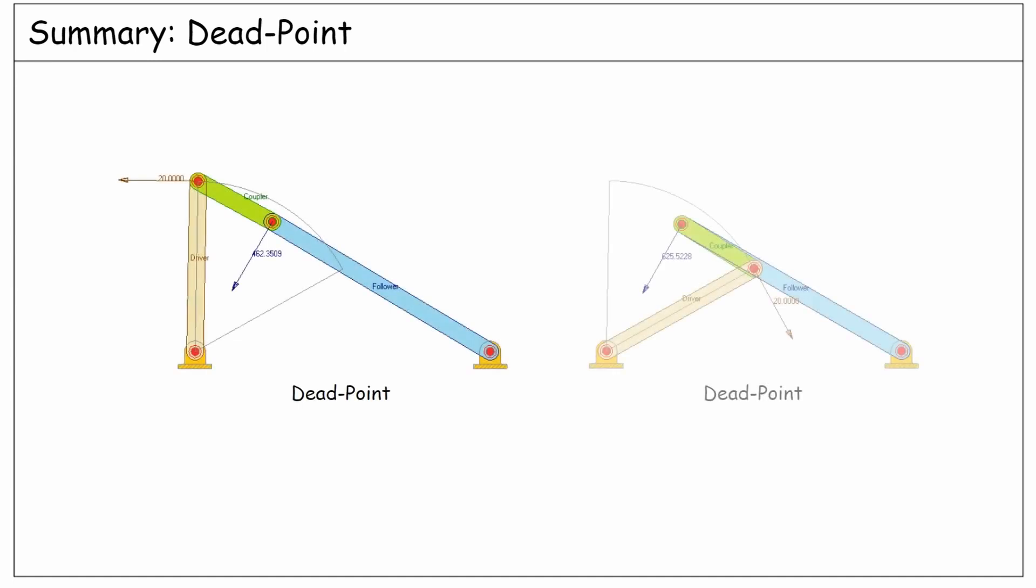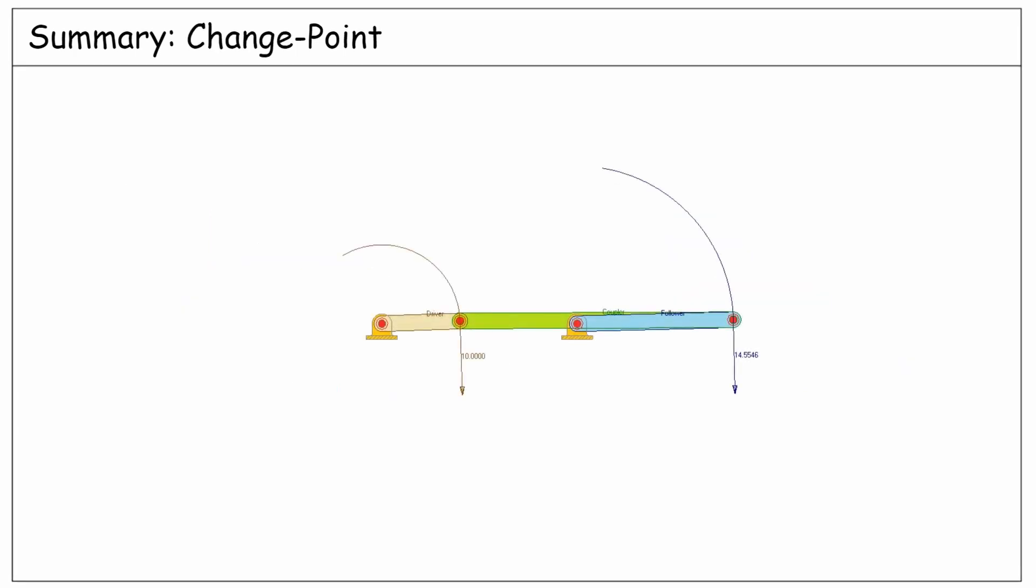So as a quick summary, we have learned that a dead point happens in a four bar linkage when the coupler and the follower become aligned. And a change point happens when all the links become aligned, which results in an unpredictable motion for the follower link.